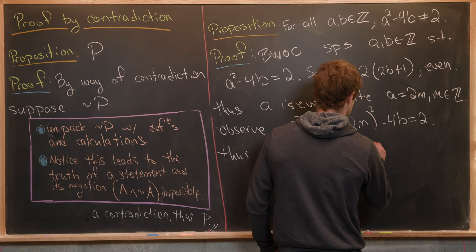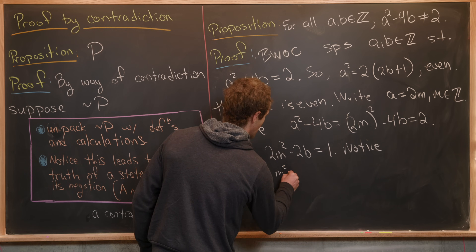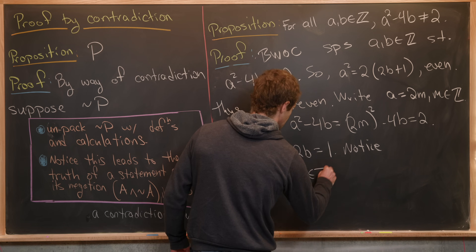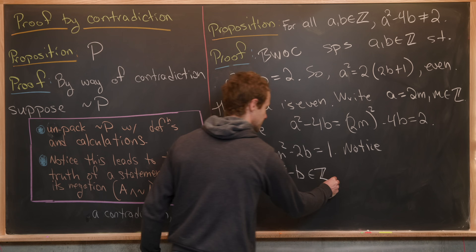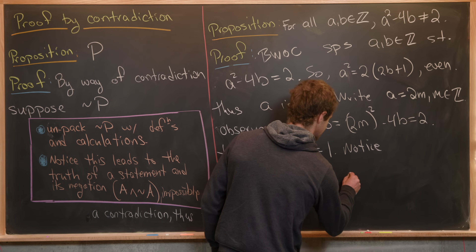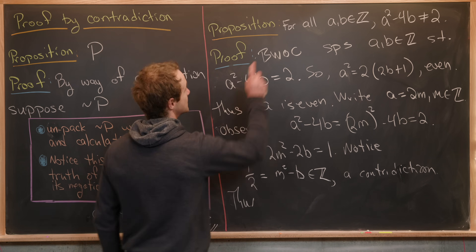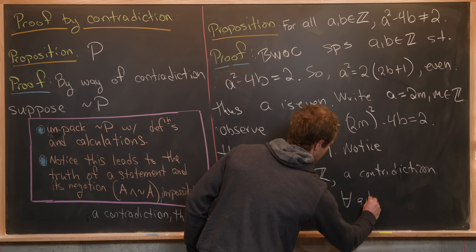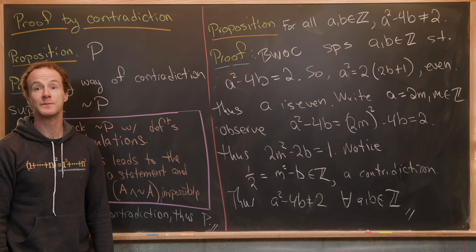Notice that this means one half can be written as m squared minus b. But m and b are both integers, so m squared minus b is an integer. We've ended up with the fact that one half is an integer. But one half is obviously not an integer — so this is our contradiction. Thus, a squared minus four b is not equal to two for all integers a and b. That's a good place to stop.